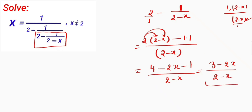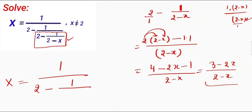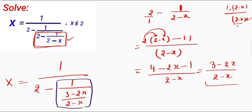Now I will put this value back into the equation. So the equation will become x is equal to 1 divided by 2 minus 1 divided by 3 minus 2x divided by 2 minus x. Now see this part of my equation — I can write this part as 1 divided by 2 minus x.